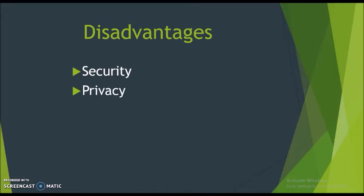Privacy: the sophistication of IoT provides substantial personal data in extreme detail without the user's active participation. Complexity: some find IoT systems complicated in terms of design, deployment, and maintenance, given the use of multiple technologies and a large set of new enabling technologies.